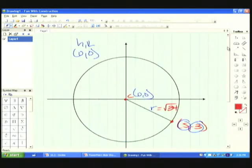So if you're going to write the equation, it's going to be x squared plus y squared, because there is no h and k, is the square root of 34 squared, because I need r squared. So that's going to be x squared plus y squared is equal to 34.